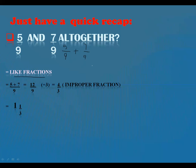If they are like fractions, the addition or subtraction is very simple because you just have to focus on their numerators. I am going to write down 9 as the common denominator in the next step, and then the two numerators will come in the numerator placement. 5 plus 7 will be 12, and 12 upon 9 is your fraction after doing addition.